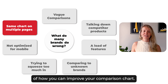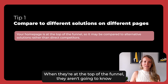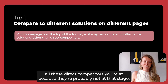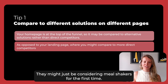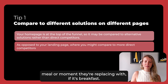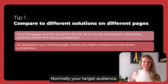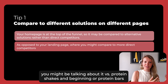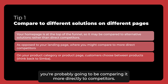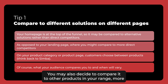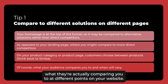I'm going to give you four really concrete tips on how you can improve your comparison chart. The first tip: you need to compare different solutions on different pages — think of it as the journey. When they're at the top of the funnel, they aren't going to know all your direct competitors because they're probably not at that stage yet. Let's take a meal shake — they might not have ever used one before. They might be comparing it to whatever meal they're replacing, like a bowl of cereal or bread and cheese, depending on your target audience. Or if you're going with an athletic audience, you might be comparing it to protein shakes or protein bars. Versus on the product page, you're probably going to compare it more directly to competitors or to other products in your range. Really think about what they're actually comparing you to at different points on your website.